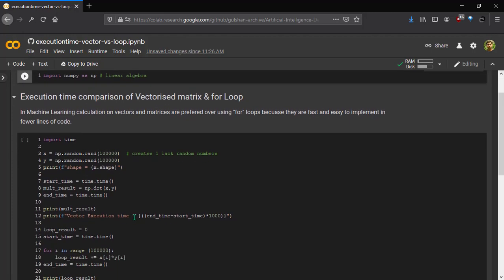Now to compare the execution time of for loop versus using the vectors, we need to get the start time and the end time. So we have imported the time module. Created two NumPy arrays with random values, each having 100,000 random values. Print the shape.